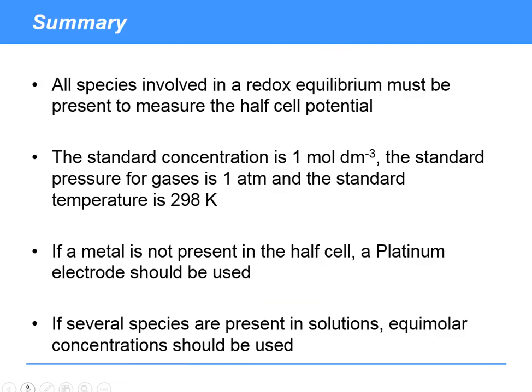So in summary, we need all the species involved in a redox equilibrium to be present in order to measure the half cell potential. If we want to make it a standard half cell potential, we need a standard concentration of 1 mol dm⁻³ for everything in solution, a standard pressure for gases of one atmosphere, and a standard temperature for everything of 298 Kelvin.